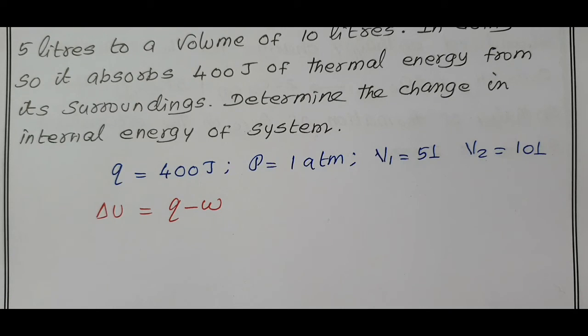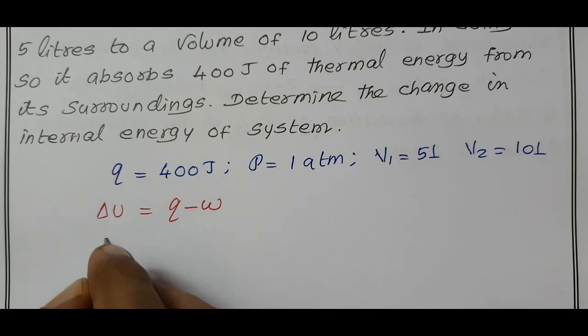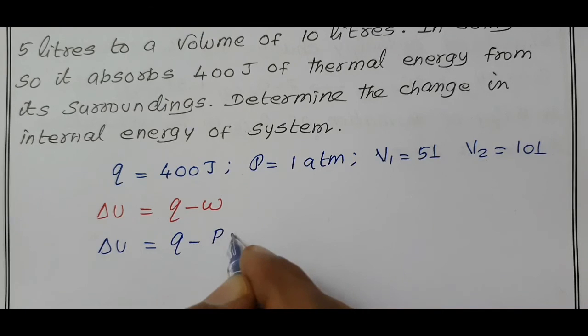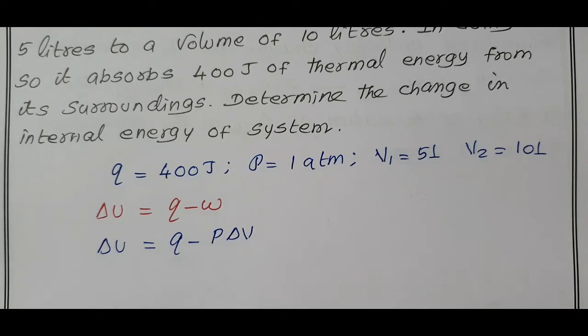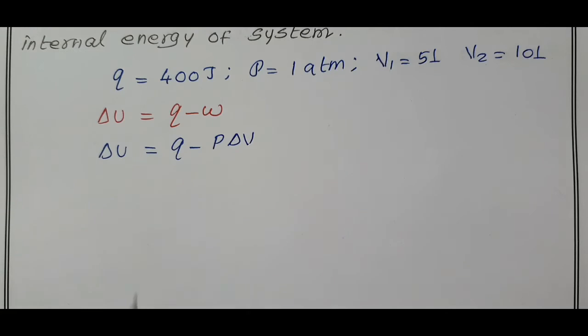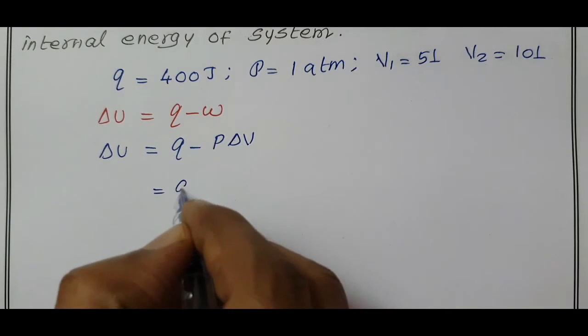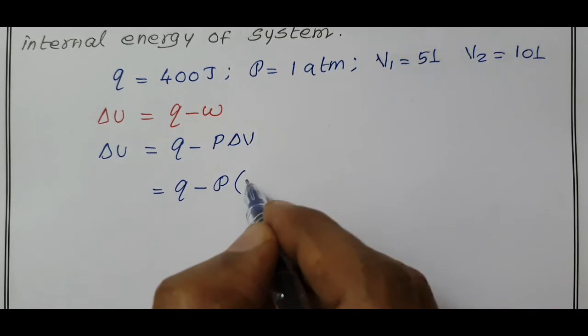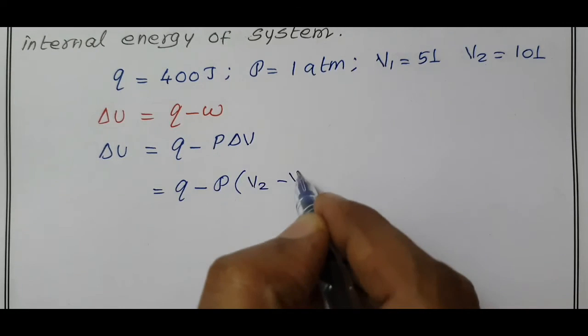The work in thermodynamics means delta U is equal to Q minus pressure volume work. In thermodynamics, it is called the pressure volume work. That is equal to Q minus P. What is delta V or DV? V2 minus V1.